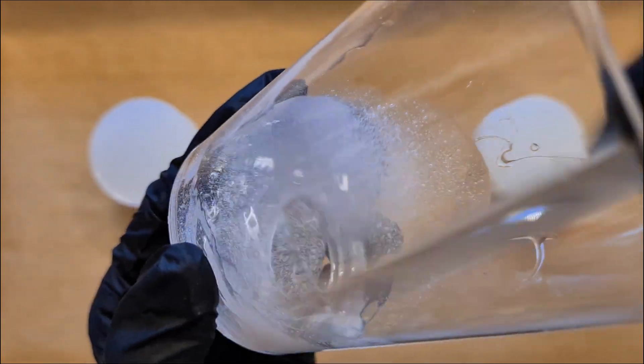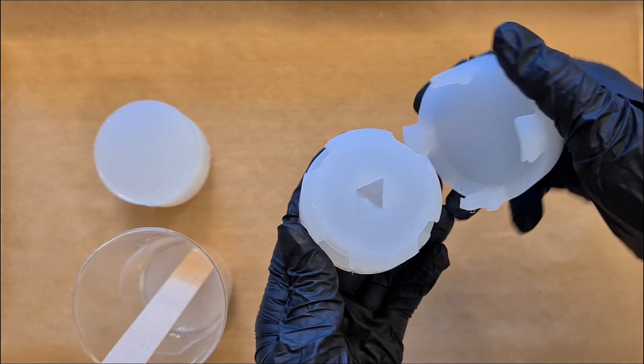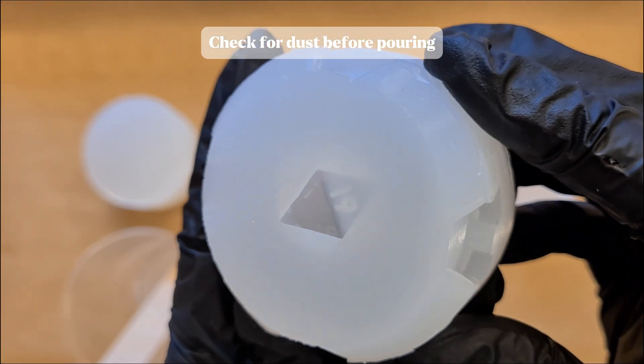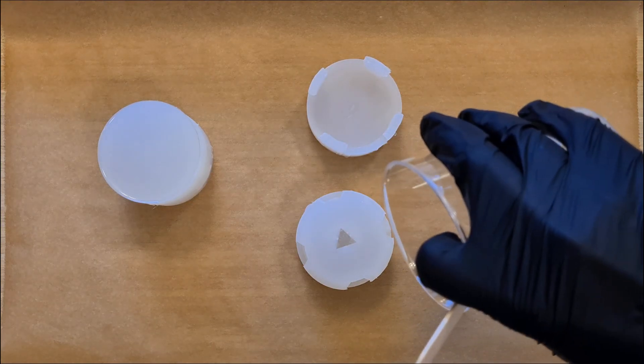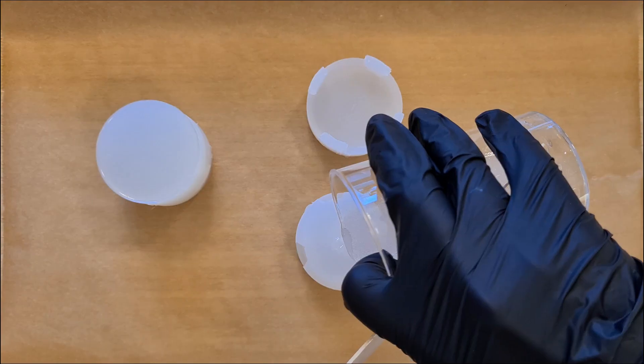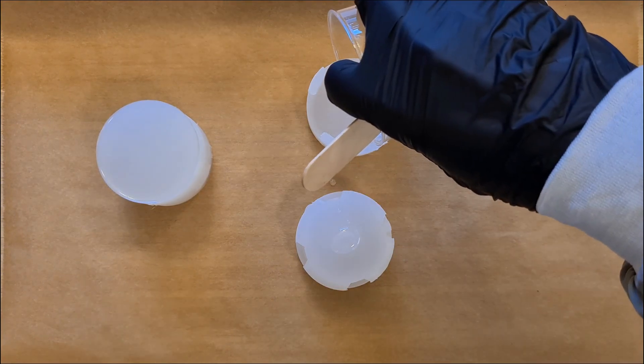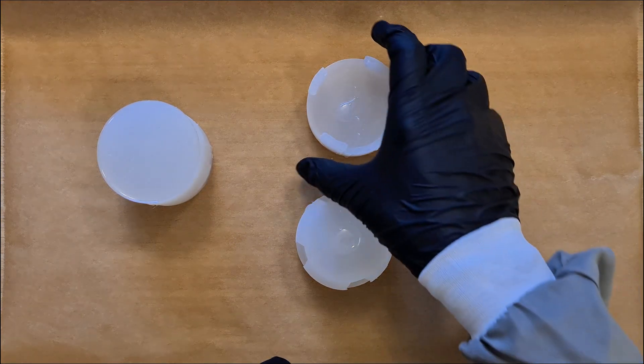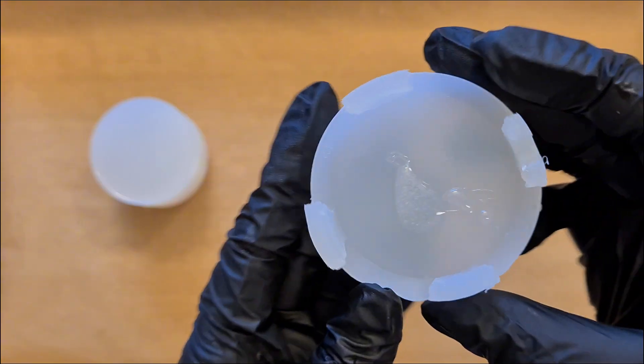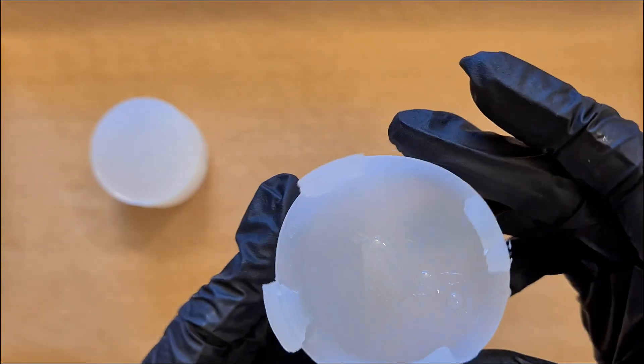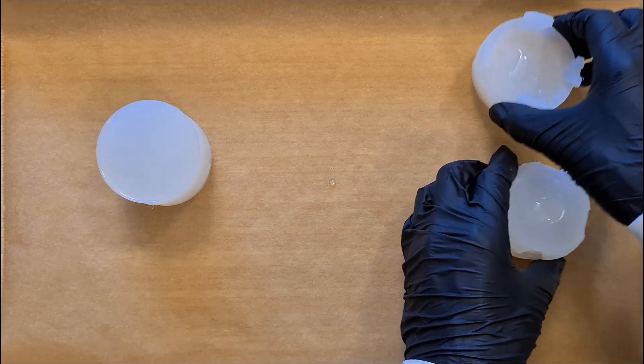Before I pour the resin into any mold, I always check for dust, but this one looks good. So I will just go ahead and dump it straight into the mold, overfilling it, and also adding some on top of the lid, which I will just float around to make sure it gets all of the edges. Now, putting that aside for comparison later.